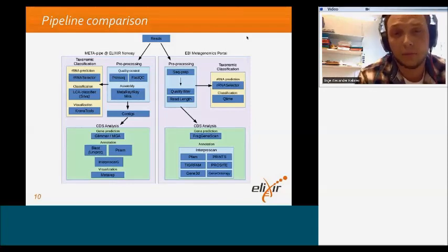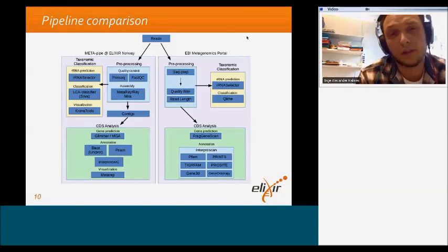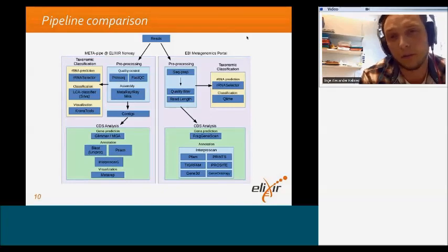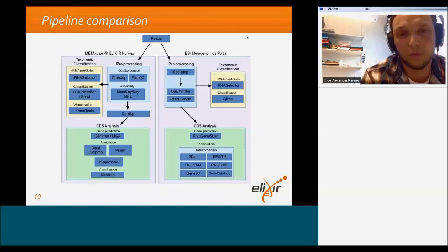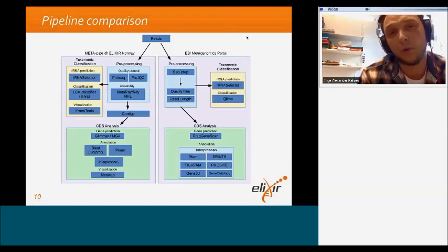The main big difference between these two pipelines is that our pipeline uses assembly, while EBI Metagenomics Portal works straight on the reads. This means that if you're interested in more complete sequences, you would use MetaPipe, but you would also get a lot less sequences in total. However, if you use the EBI Metagenomics Portal pipeline, you will get more fragmented sequences, but also a lot more sequences.